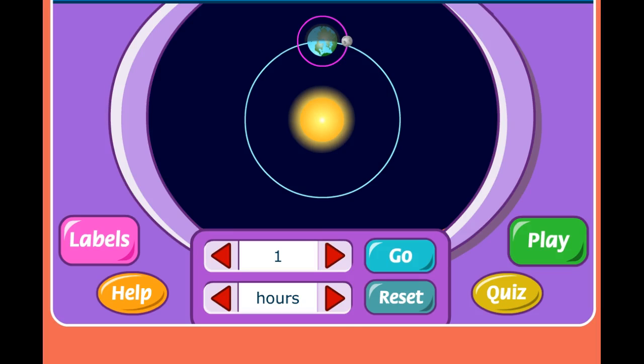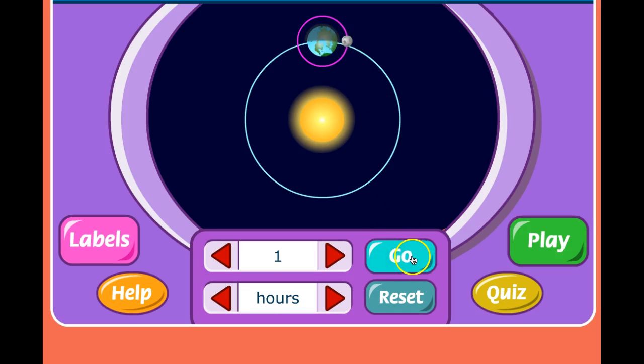So, let's take a look at this first one. We can set this for hours, one hour. We can set it for one month, or we can set it for a day. So, let's go back to an hour. I'm going to push the go button here and watch very carefully on the earth and moon and see if you can see what happens. I'm going to click it now.